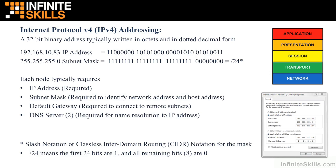Almost all IP clients are also going to require the IP address of a DNS server. Because DNS service is so important, very often you will identify not one but two DNS servers — a primary preferred server and an alternate, just in case the preferred server is unavailable.